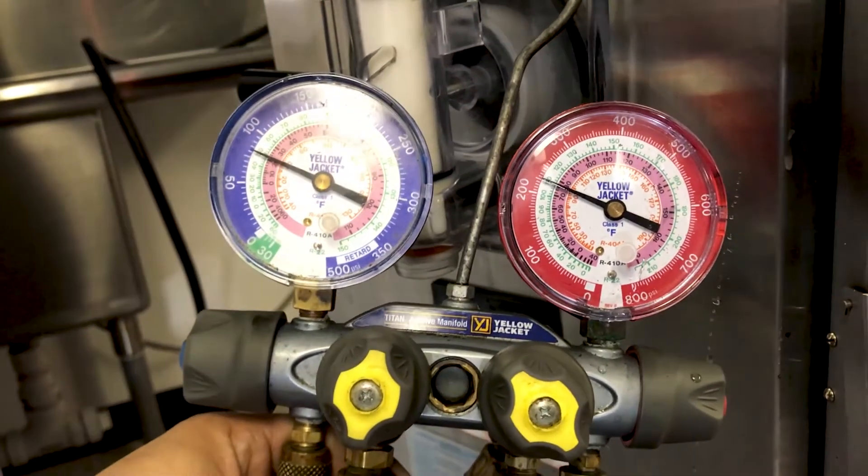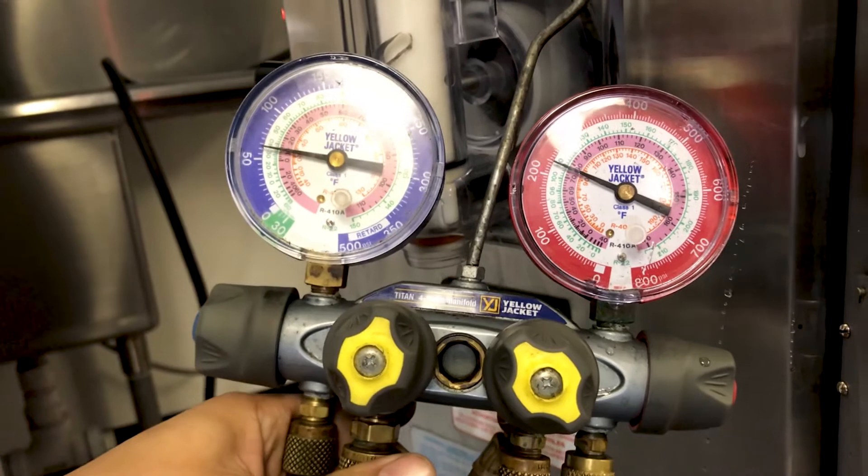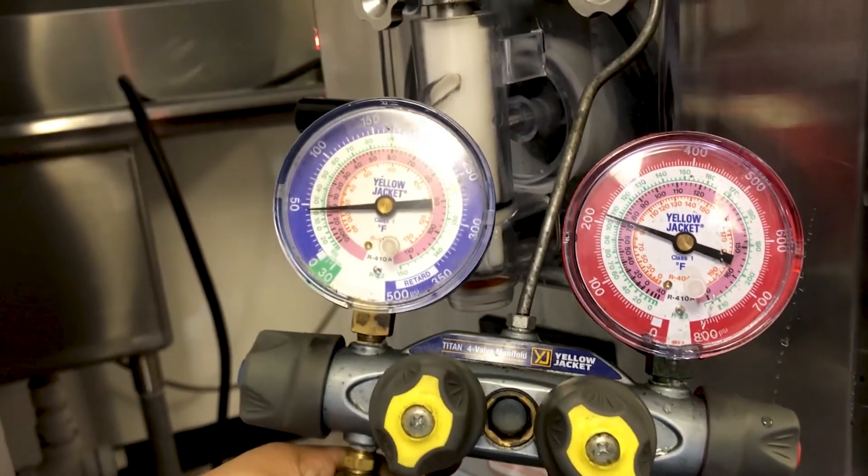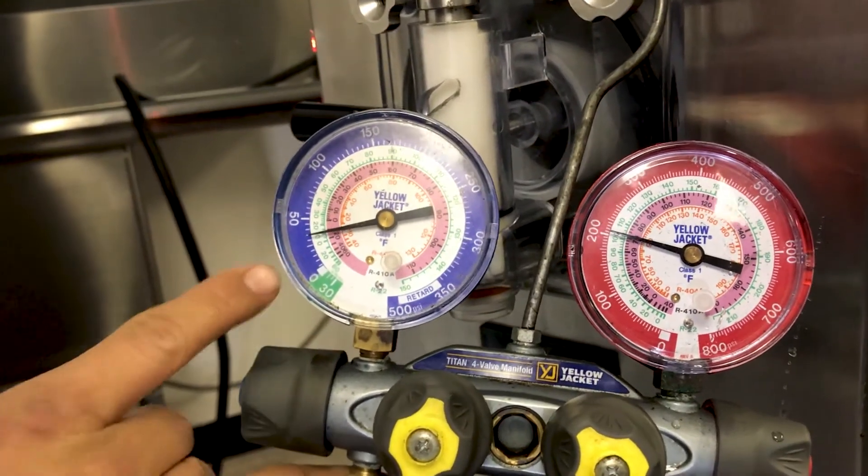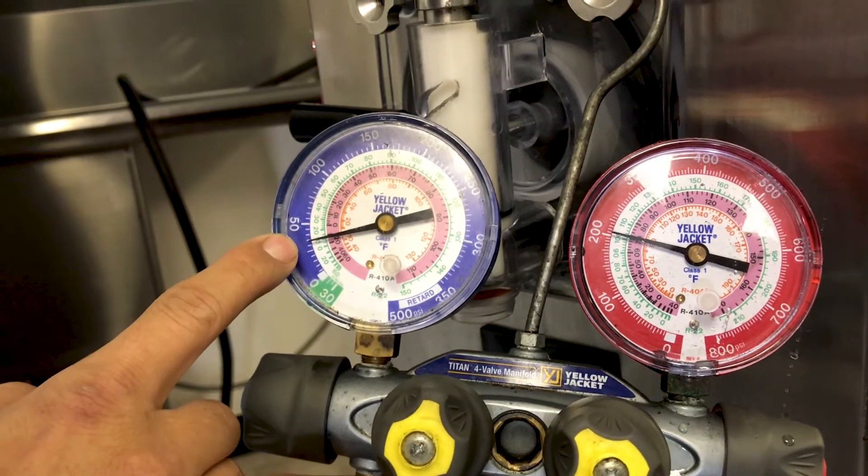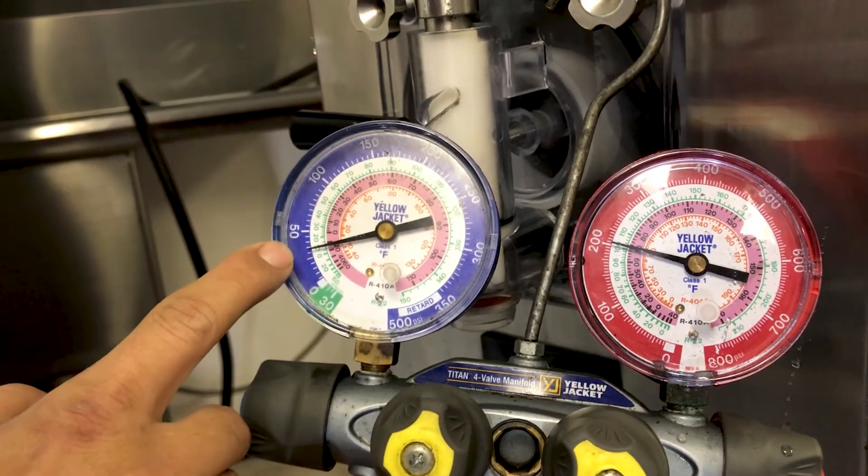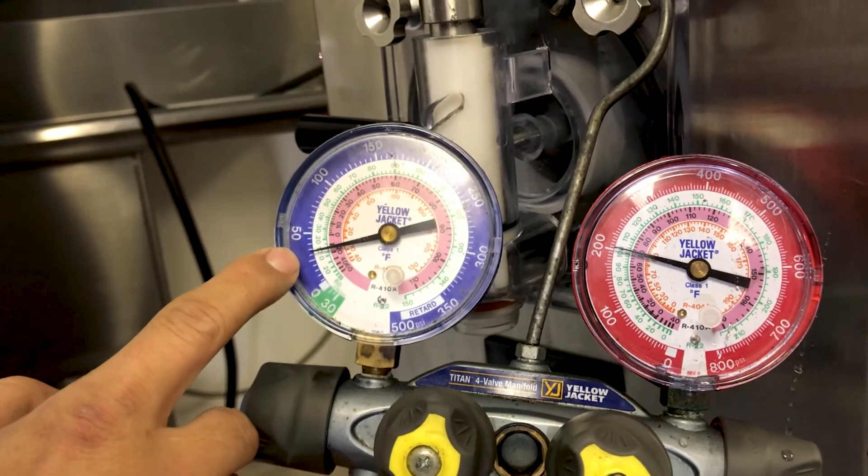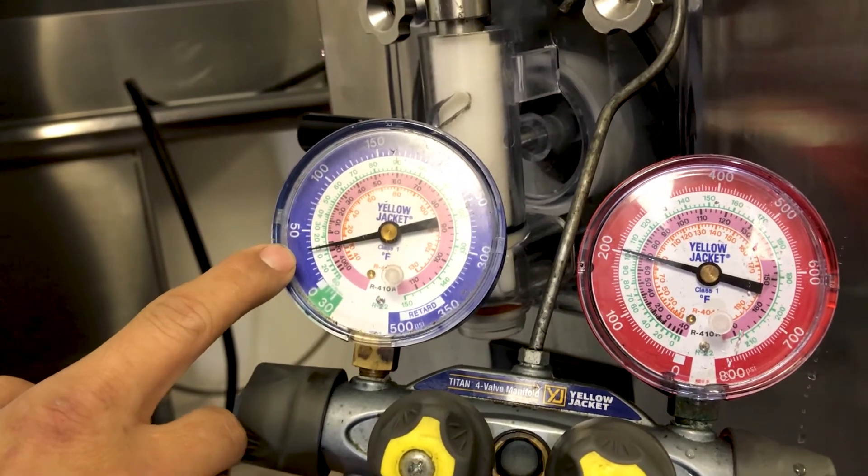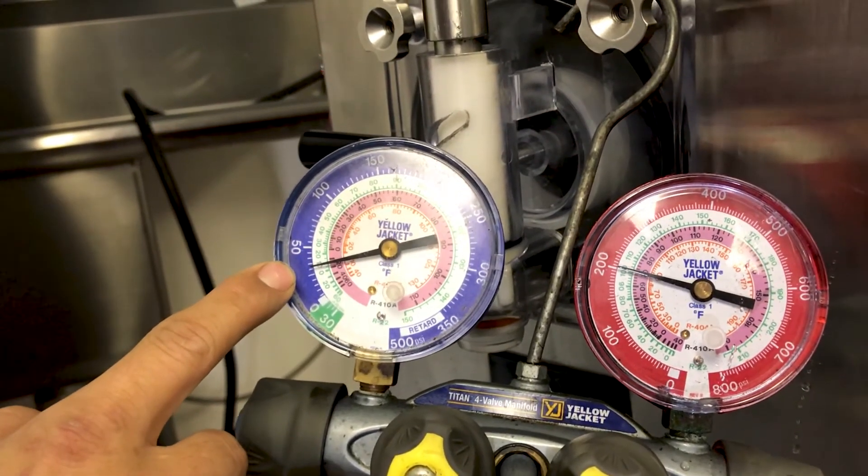So here you're going to see the pressure start getting to where they need to be. And on this particular machine, Taylor recommends the low side to set around 30 to 35. So as you see right here, it's settling right on top of 30, 31 maybe. So that's where we're supposed to be.